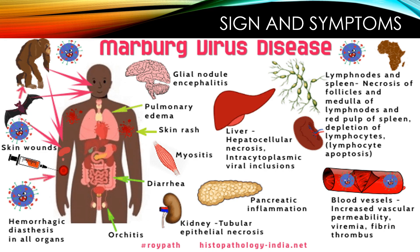In the brain, it can cause glial nodule encephalitis. In the lungs, there is pulmonary edema. It also causes skin rashes and myositis in the muscles. For the GI tract, it can cause diarrhea, nausea, and vomiting.